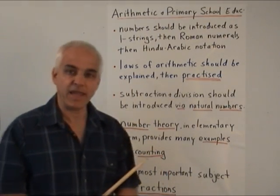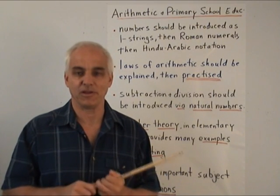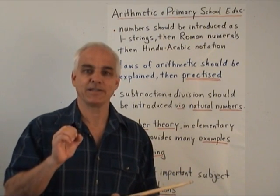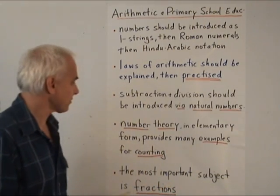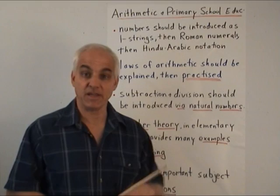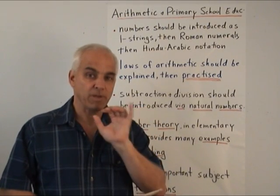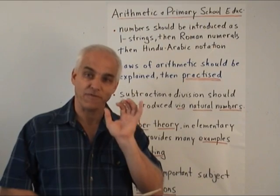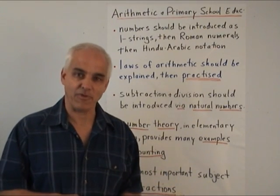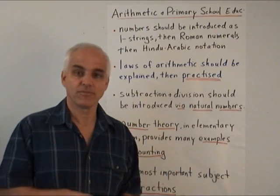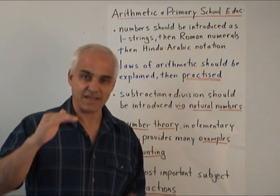The laws of arithmetic should be explained and then practiced. It is very, very important that all students get a lot of practice with the laws of arithmetic. Most weakness in mathematics, even at the university level, has its roots in not enough training in basic arithmetic. Subtraction and division should be introduced via natural numbers — one should not introduce the integers or the fractions first. Basic number theory provides us with a lot of nice examples: primes, squares, triangular numbers, and many other things — they are a good source of examples for arithmetic.